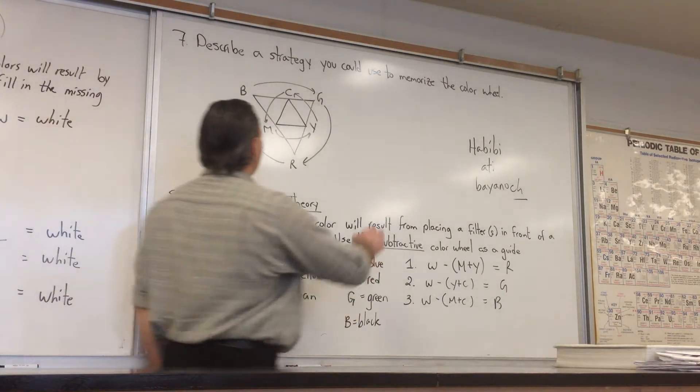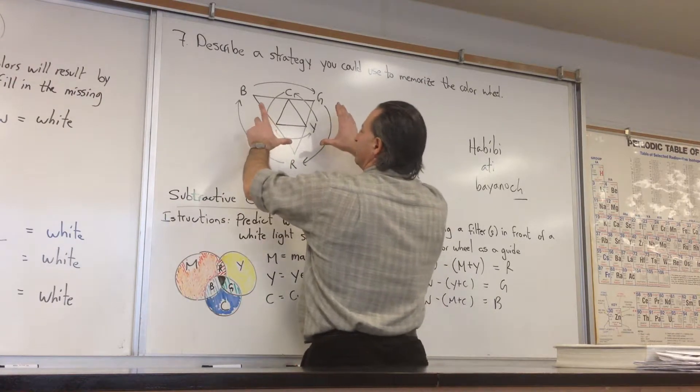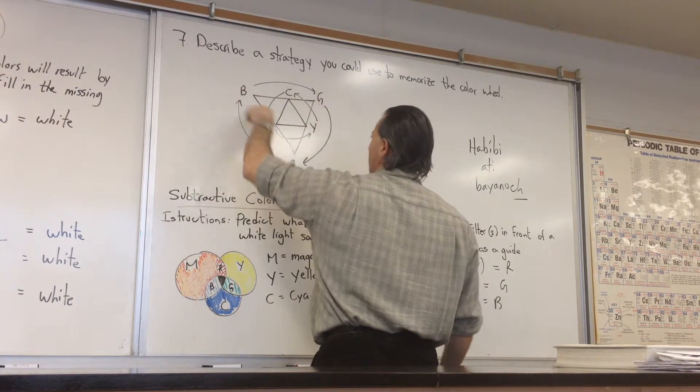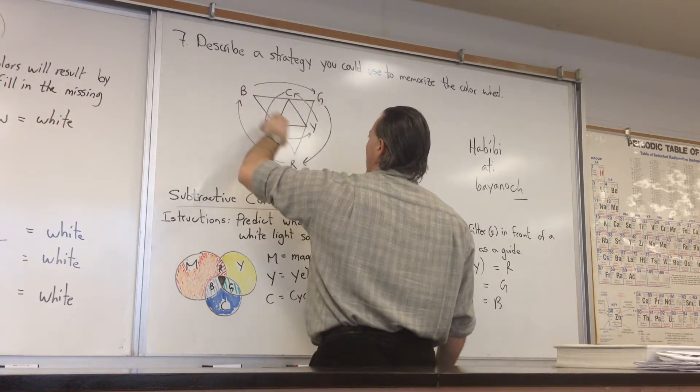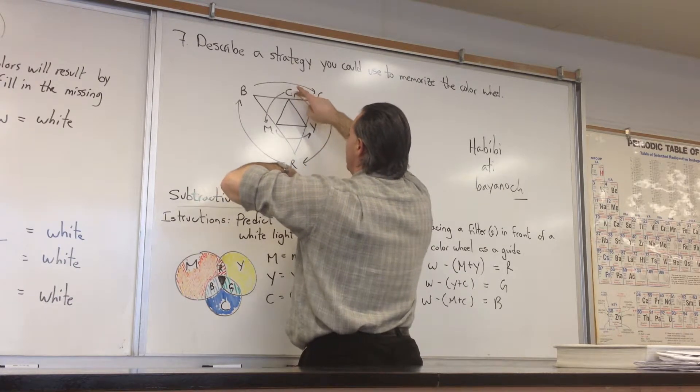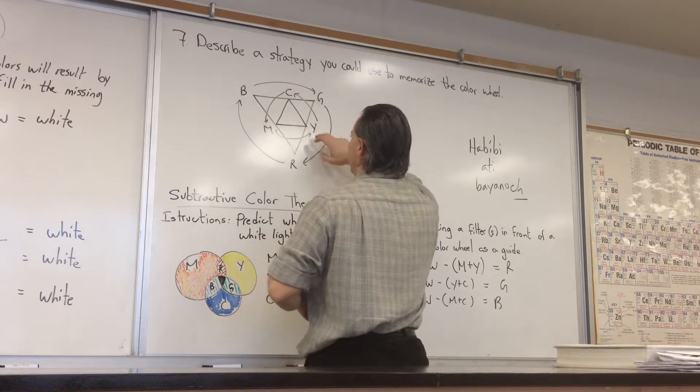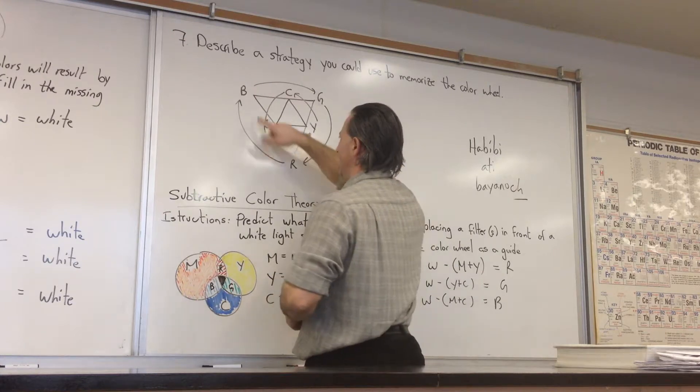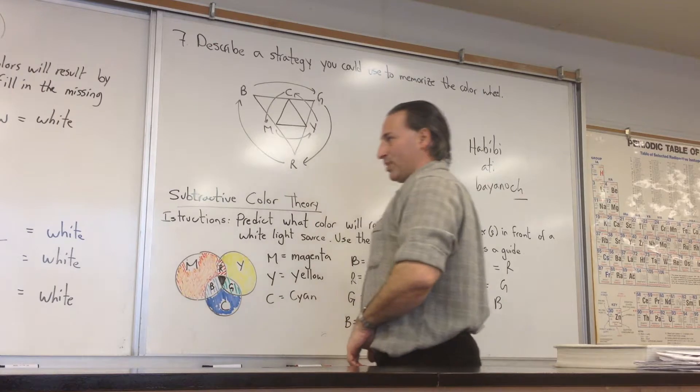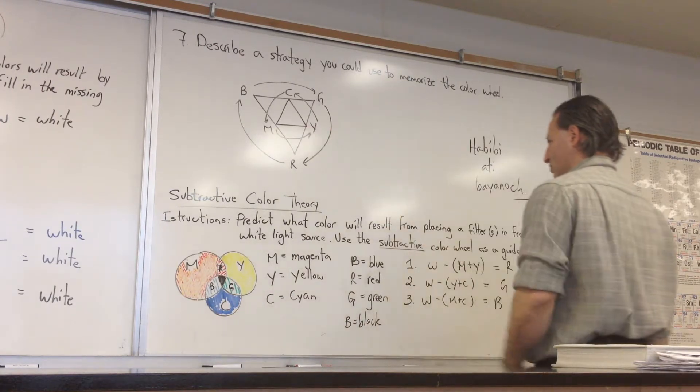One way to do it is to draw a larger triangle and put blue, green, and red on the outside. Those are the primary colors. The way those primary colors mix will give you cyan, magenta, and yellow. You memorize BGR alphabetically and CMY alphabetically. This will help you reconstruct the color wheel.